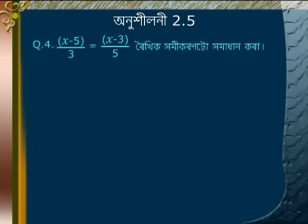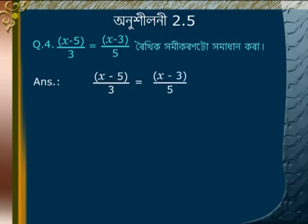Problem 4: Solve (x minus 5)/3 is equal to (x minus 3)/5. Expanding the brackets: x/3 minus 5/3 is equal to x/5 minus 3/5.